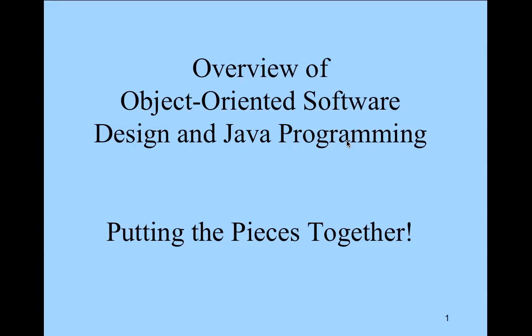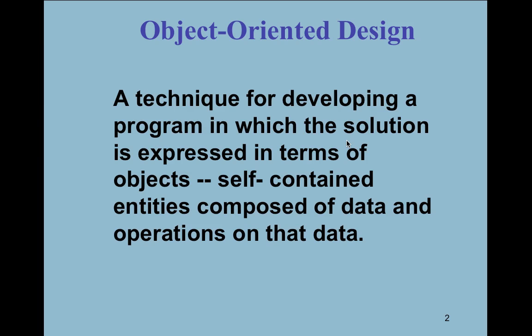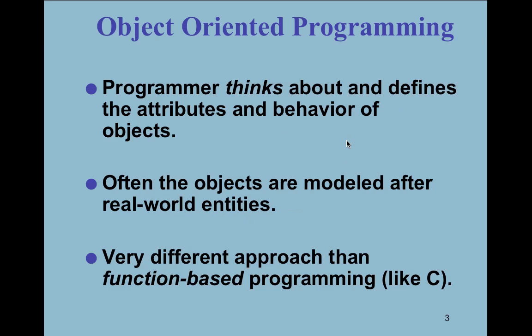Putting the pieces together: what we're looking at in terms of design is self-contained entities composed of data and the operations on the data. You have to think in an object-oriented fashion. Hopefully you've got the concept of the class down — every unit of the program is built as a class. When instantiated, the class becomes the object. I want to talk about object behaviors today: the states, properties, and characteristics of those objects, and how they communicate.